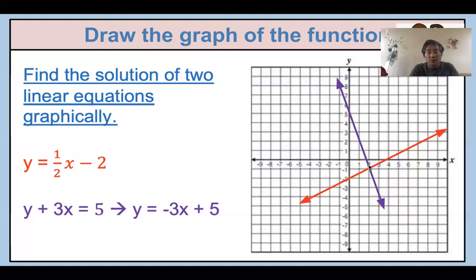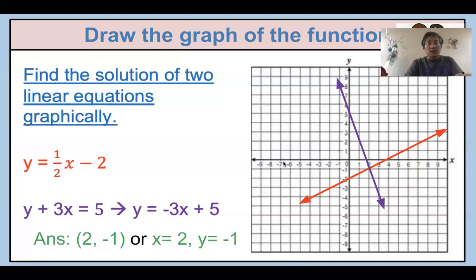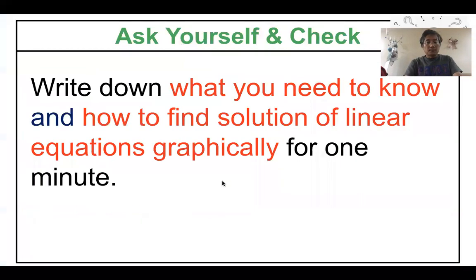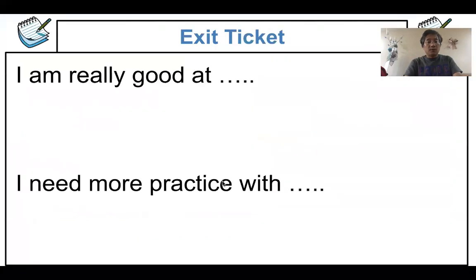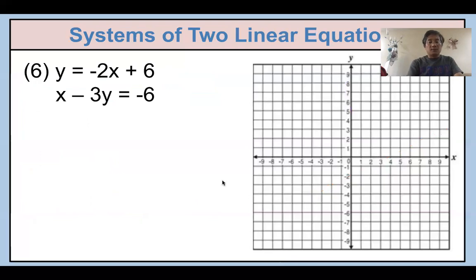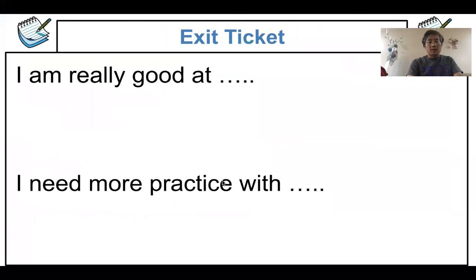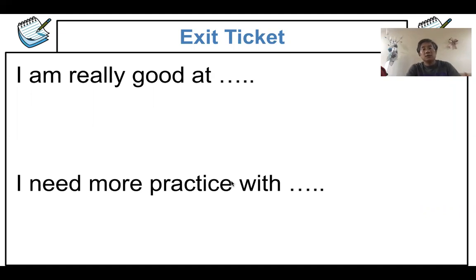The solution is at x = 2, y = -1. You have six questions to complete. Please finish all six questions, and on the last slide you can find the exit ticket — answer that as well. You know how to turn in your work in Google Classroom. You have the Do Now, the notes, the six assigned questions, and the exit ticket.